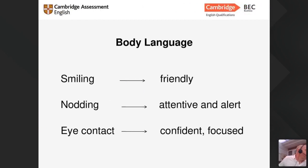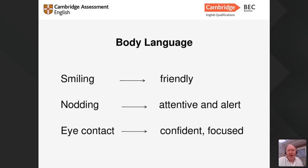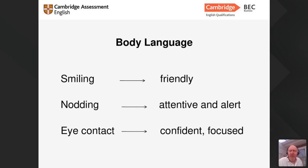Smiling gives the impression that you're friendly. What I try to do is, when I come into the presentation room if some audience members are already there, I go and talk to them, smile, shake their hand, tell them who I am, and ask who they are. By doing that you've got some friends in the audience already. It doesn't matter how many people are there — you've already spoken to some, made contact, they've seen you smile, and that can really help to calm any nerves before the presentation.